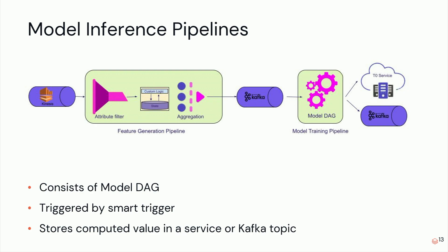One more thing to mention is the DAG. Especially for pricing models, it is not just one model computing dynamic pricing — there are different layers of models. The intermediate models compute various decision variables and pass them on to the next layer of the model, eventually reaching the primary model which computes the dynamic pricing and passes it on to the services. There is also a smart trigger here ensuring that data dependencies are met and data consistency is there before triggering model inference. This is happening almost every minute, computing values for all different cities and storing them in downstream services.